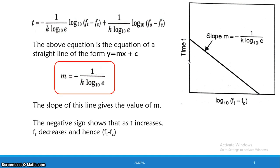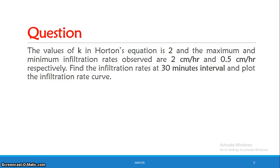Now we have a worked example — a previous university question. The value of K in Horton's equation is 2, and the maximum and minimum infiltration rates observed are 2 cm per hour and 0.5 cm per hour respectively. Find the infiltration rates at 30-minute intervals and plot the infiltration rate curve.